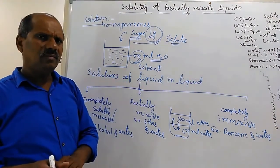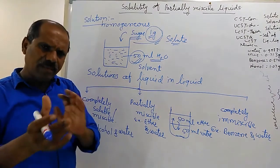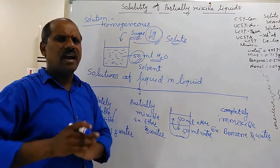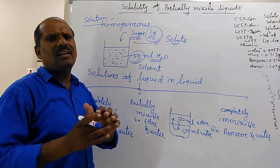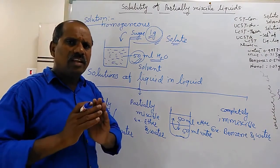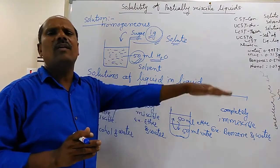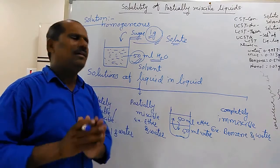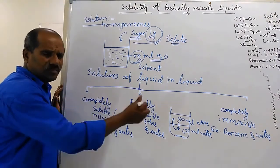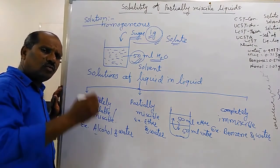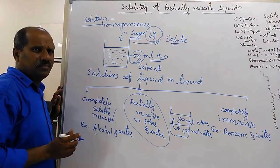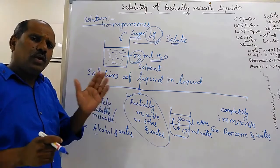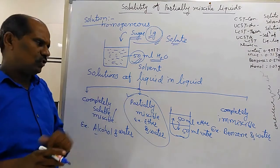The third example: take two liquids like benzene and water and try to mix them. On keeping the beaker on stable ground, we observe that the benzene layer and water layer are completely separated. There is no solubility of benzene in water or water in benzene. That type of liquid pair is called a completely immiscible liquid pair. Amongst these three types, in this chapter we will see in detail the partially miscible liquids and how temperature shows its effect on their partial miscibility.